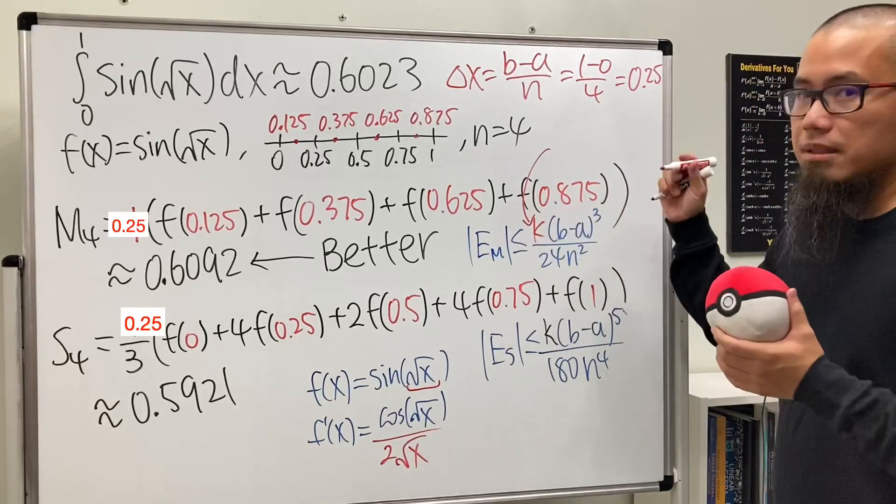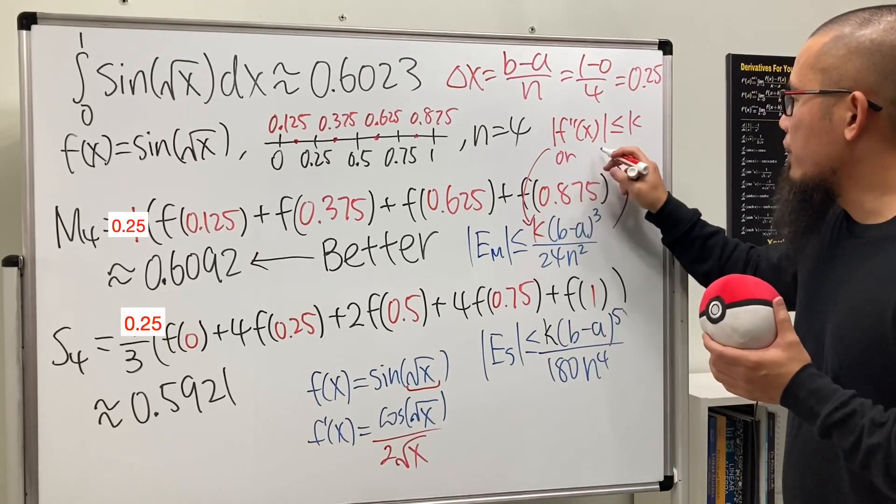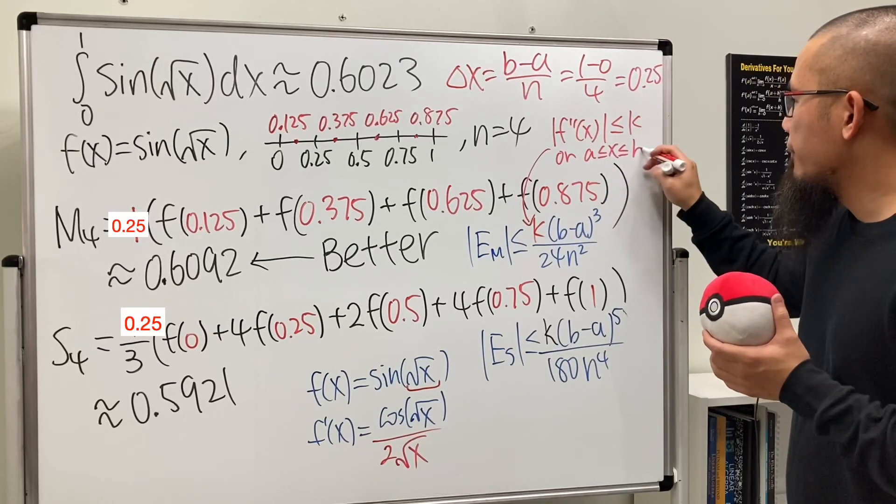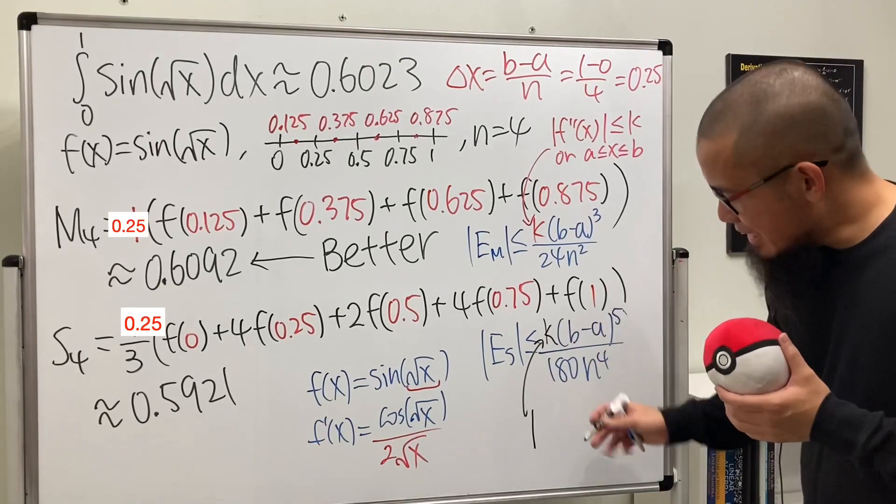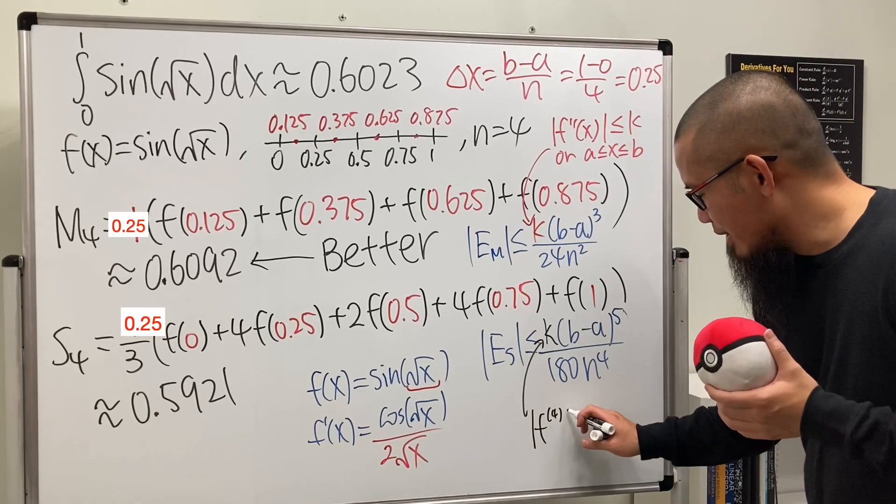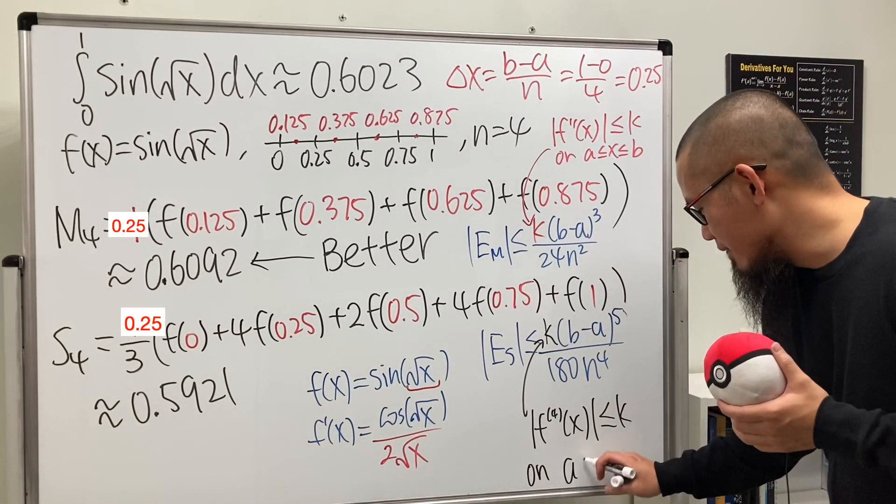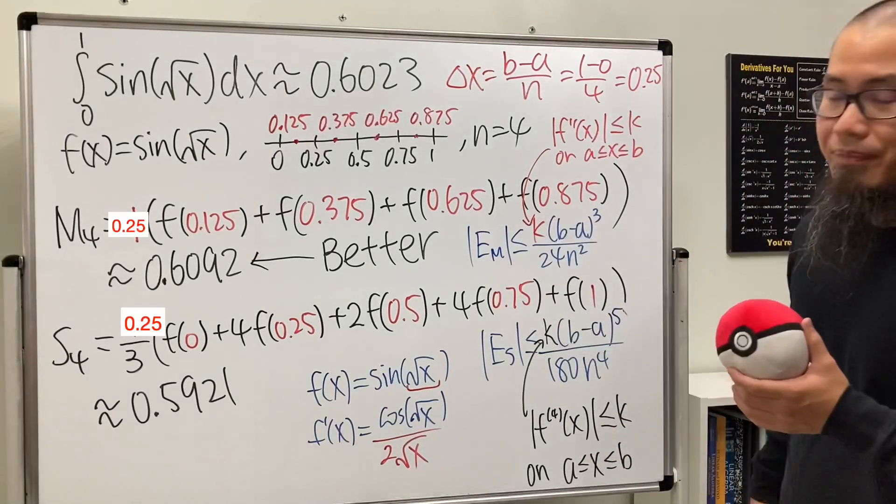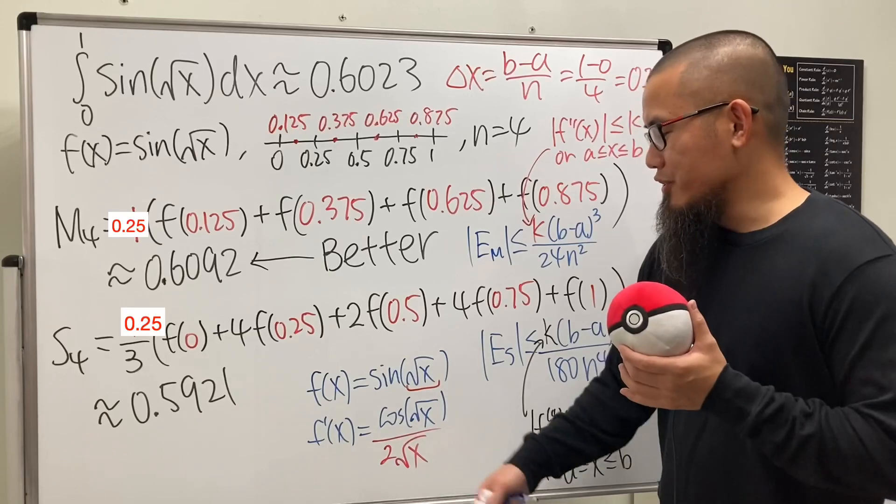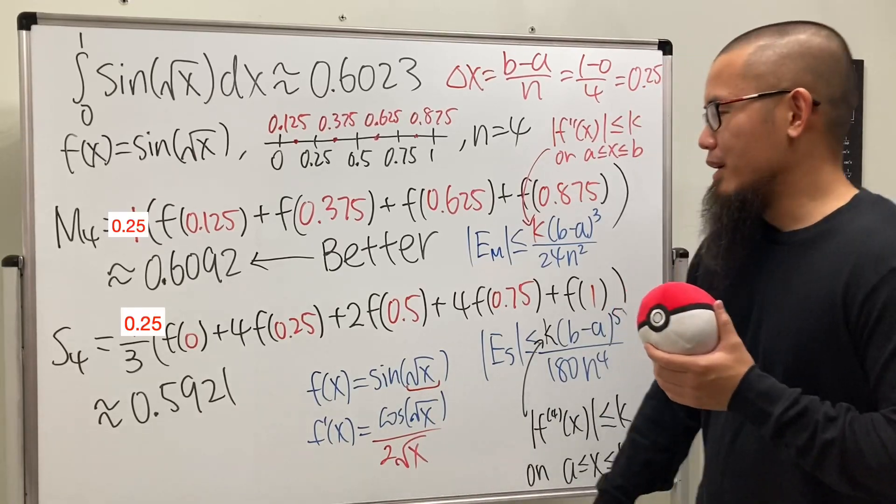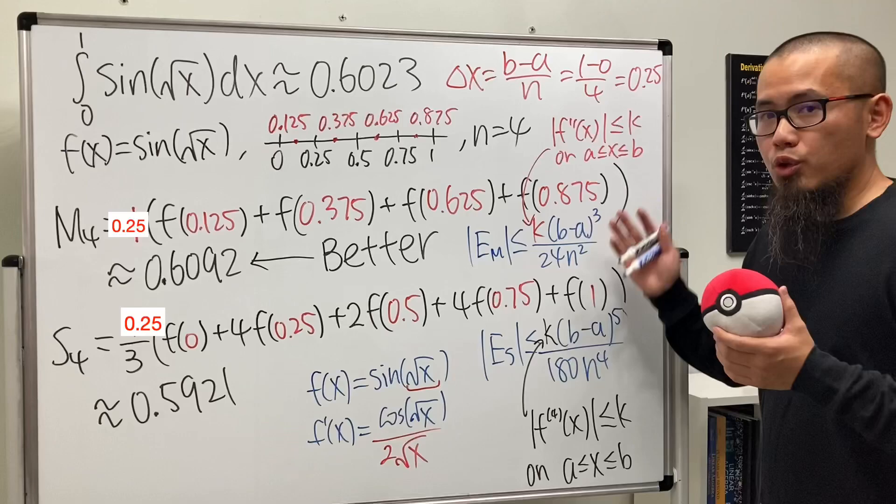But I have to remind you, this K here is the maximum of the absolute value of the second derivative on the interval from a to b. But this K here is the maximum of the absolute value of the fourth derivative on the interval we care about, which is a to b. In our case, from 0 to 1. As you've seen already, if the first derivative doesn't exist, if you differentiate again and again, we are not going to have the second derivative, we are not going to have the fourth derivative. Therefore, these error formulas don't apply anymore.